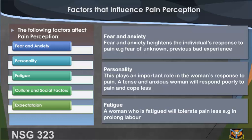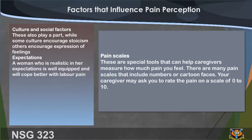Factors that influence pain perception include fear and anxiety, personality, fatigue, culture and social factors, and expectations. Fear and anxiety intensify the individual's response to pain, for example fear of the unknown or previous bad experience. Personality plays an important role in the woman's response to pain; a tense and anxious woman will respond poorly and cope less. Fatigue — a woman who is fatigued will tolerate pain less, for example in prolonged labor. Culture and social factors also play a part; while some cultures encourage stoicism, others encourage expression of feelings. A woman with realistic expectations is well equipped and will cope better with labor pain.